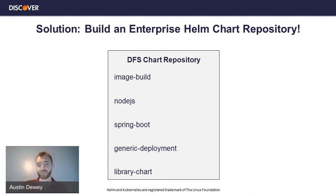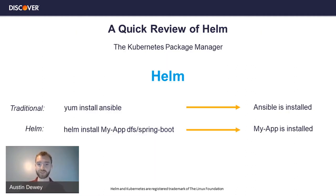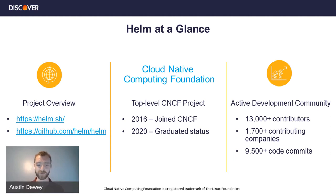Our solution at Discover is to build an enterprise Helm chart repository. You can see a few different Helm charts here: image build, Node.js, and so on — we'll get to each in detail shortly. First, let me give a quick Helm 101 before we dive into the technical details. Helm is known as the Kubernetes package manager, named because it works similarly to an OS package manager — if I say 'yum install ansible' I just expect Ansible to be installed. Helm works in that same way with Kubernetes. It just reached graduated status with the CNCF last year, which is very exciting, and has a highly active development community.